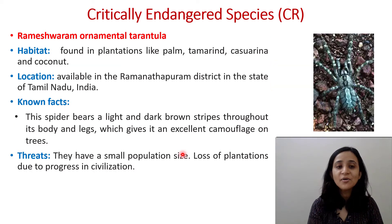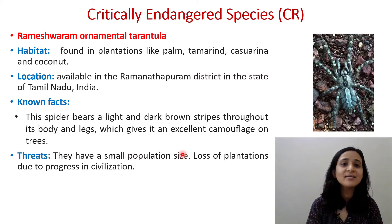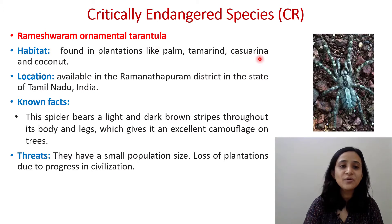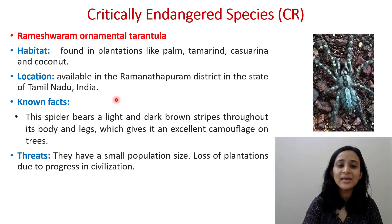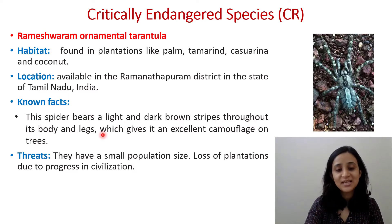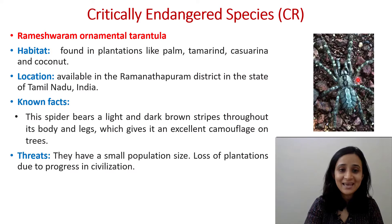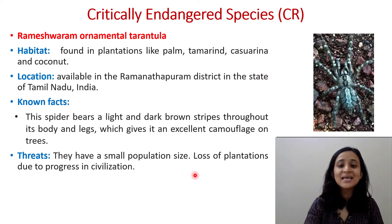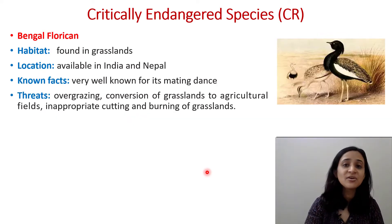Third is the Rameshwaram Ornamental Tarantula, also under Critically Endangered. Its habitat is found in plantations like palm, tamarind, casuarina, and coconut, located in the Ramanathapuram district of Tamil Nadu, India. These spiders bear light and dark brown stripes throughout their body and legs, giving them excellent camouflage on trees. Threats include small population size and loss of plantations due to progress in civilization.